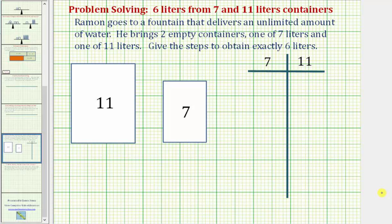Ramon goes to a fountain that delivers an unlimited amount of water. He brings two empty containers, one of seven liters and one of eleven liters. We're asked to give the steps to obtain exactly six liters.